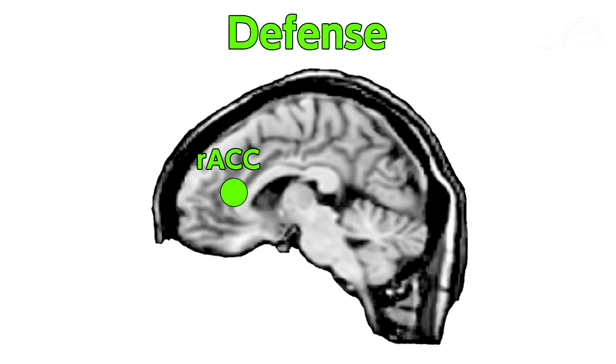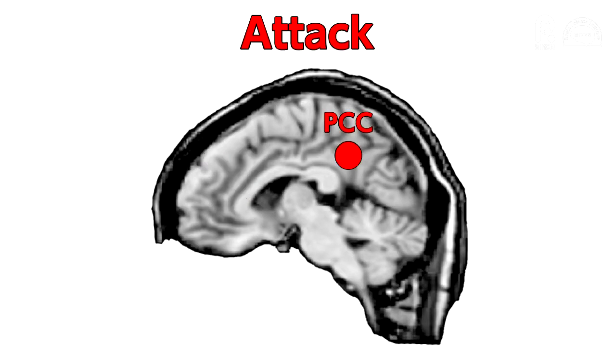Several brain areas were activated specifically during the strategy decision task. But to our surprise, we observed a difference in brain activity depending on the strategy that they selected. When the participant picked defense, the rostral anterior cingulate cortex was activated, but when they picked attack, the posterior cingulate cortex was active.